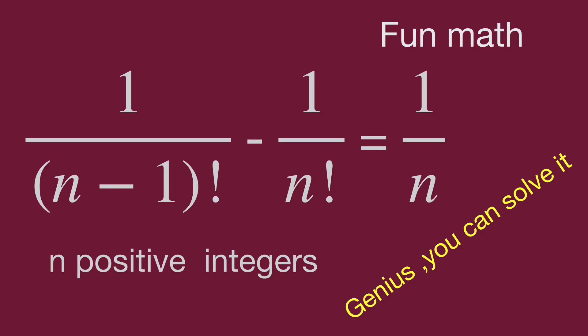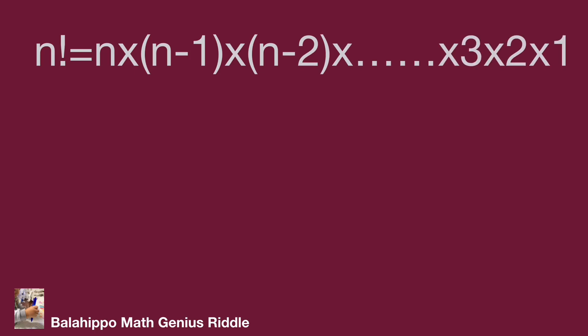Before we start, let's recap what a factorial is. n factorial equals n times (n minus 1) times numbers decreasing by 1 each time. So n minus 1 minus 1 equals n minus 2, then times n minus 2 minus 1 equals n minus 3, dot dot dot, down to the small numbers 3 times 2 times 1.